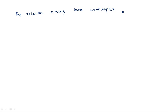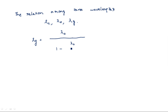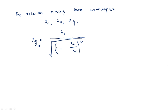Now let us see the relation among these three wavelengths: lambda c, lambda naught, and lambda g. The relation is: lambda g equals lambda naught divided by the square root of (1 minus (lambda naught / lambda c) squared). We will have a separate video explaining how this relation was derived. Remember, these three wavelengths are related by this formula.